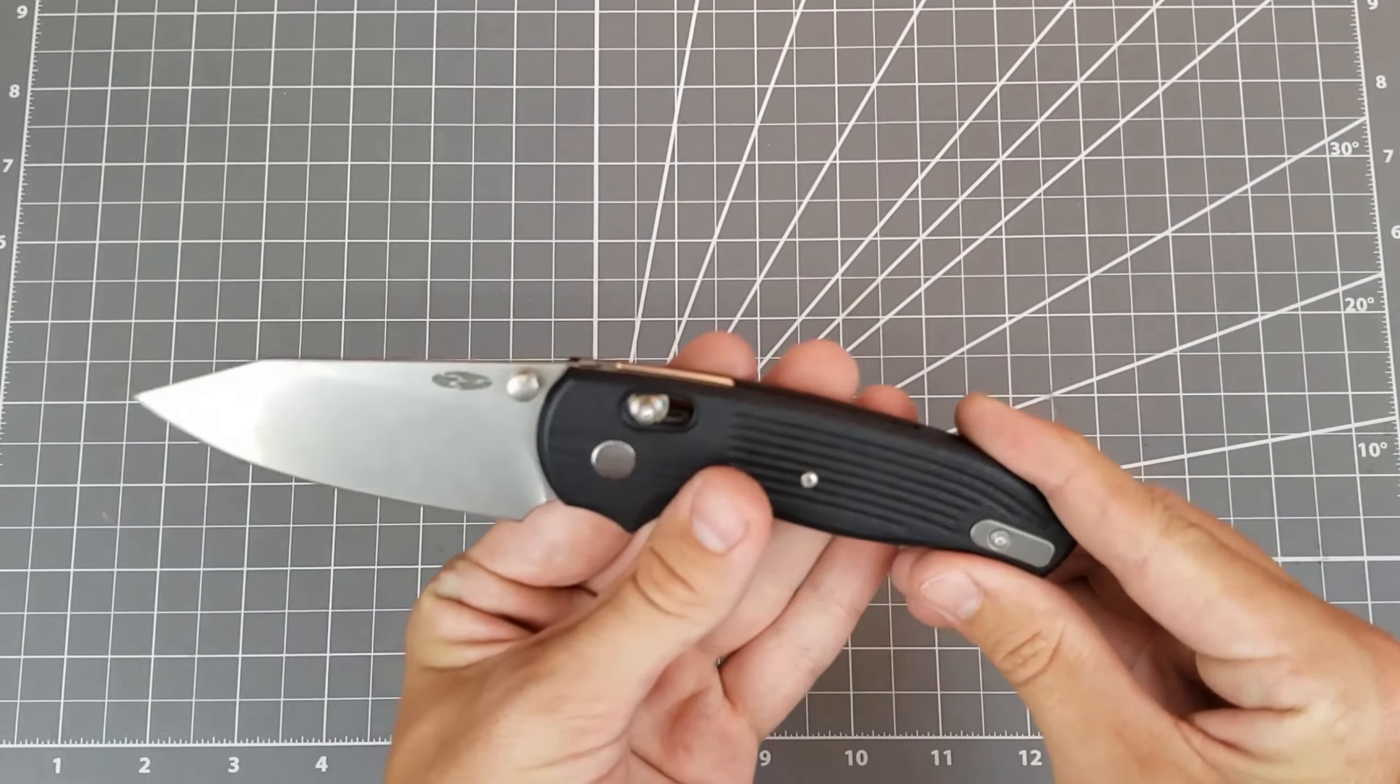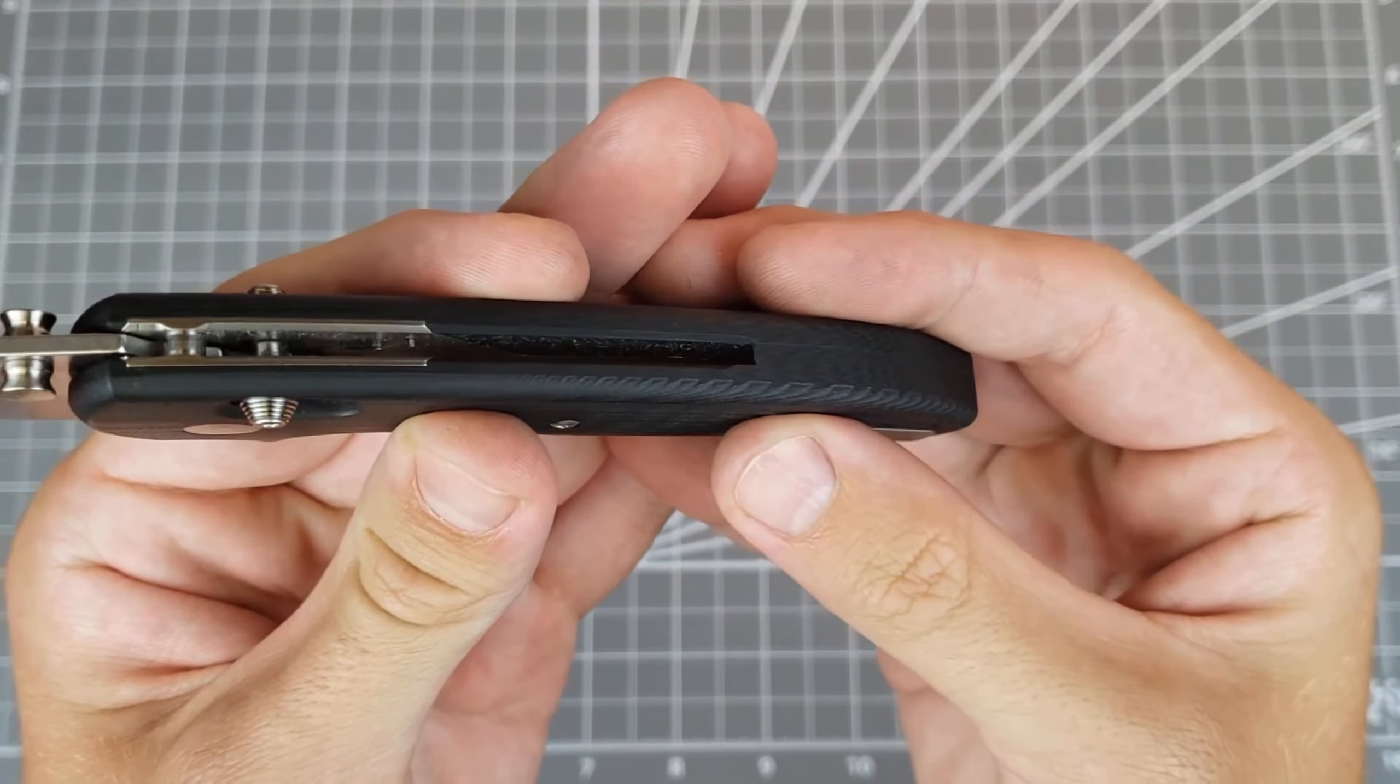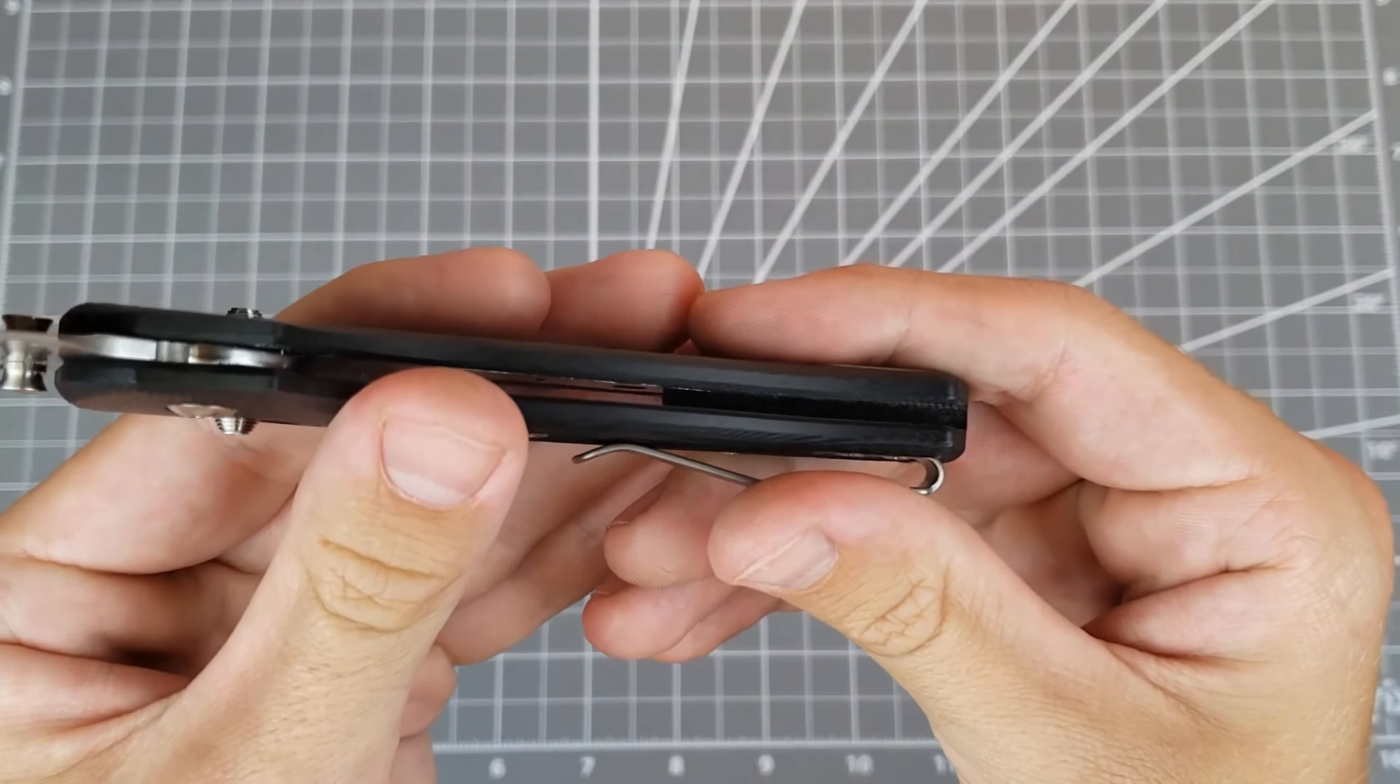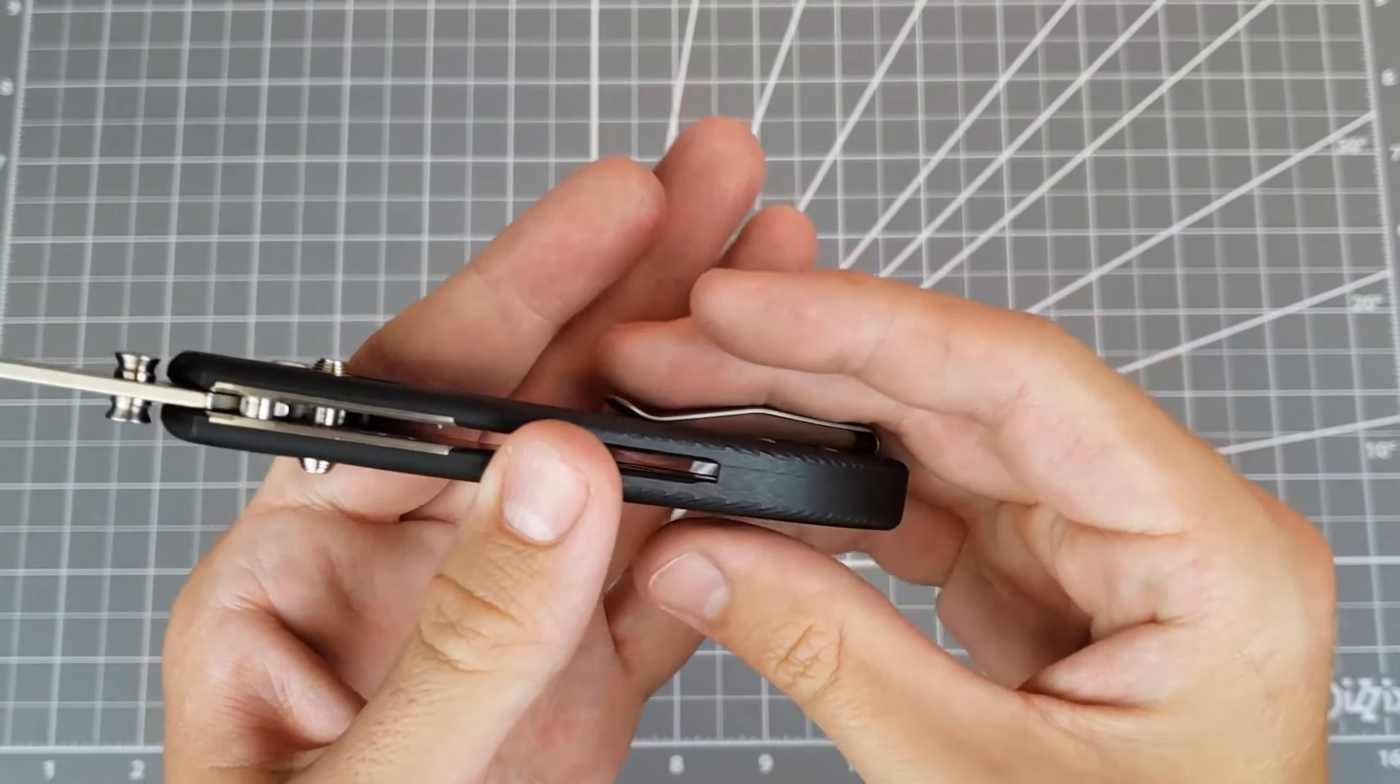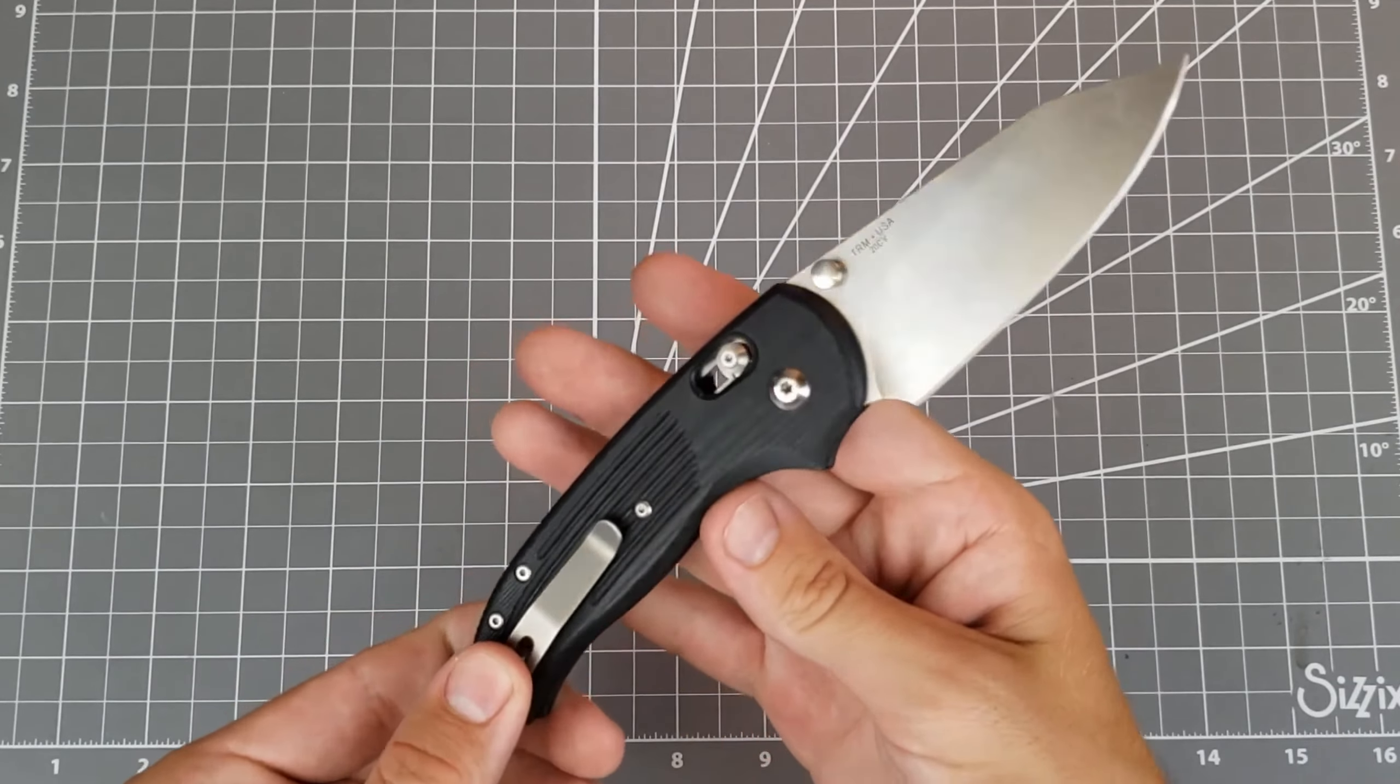My next like is the handle design on this. I like this integrated backspacer. The one piece with that show side handle. I think it's a good idea. Cut down on the parts you need. Make it a simpler, more solid design. I think it's a good choice.